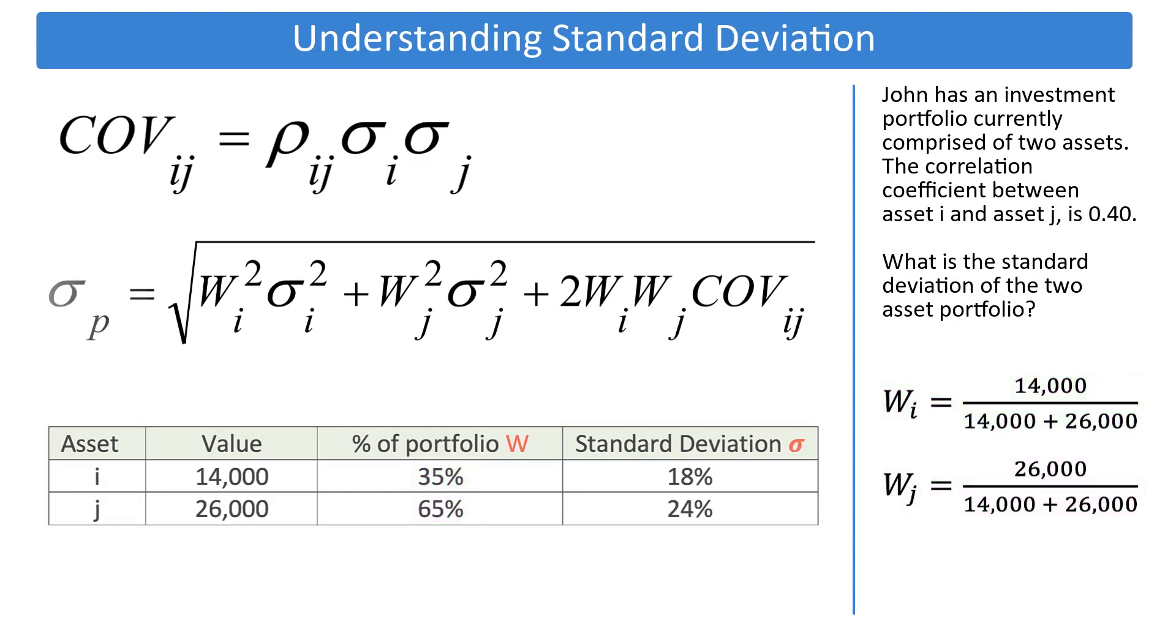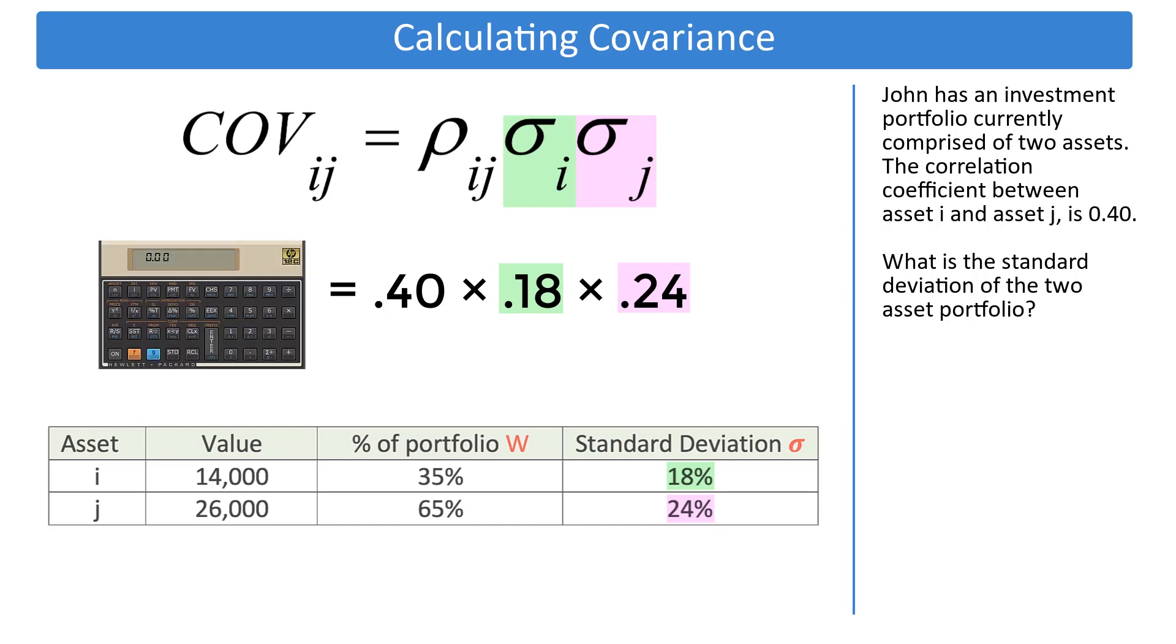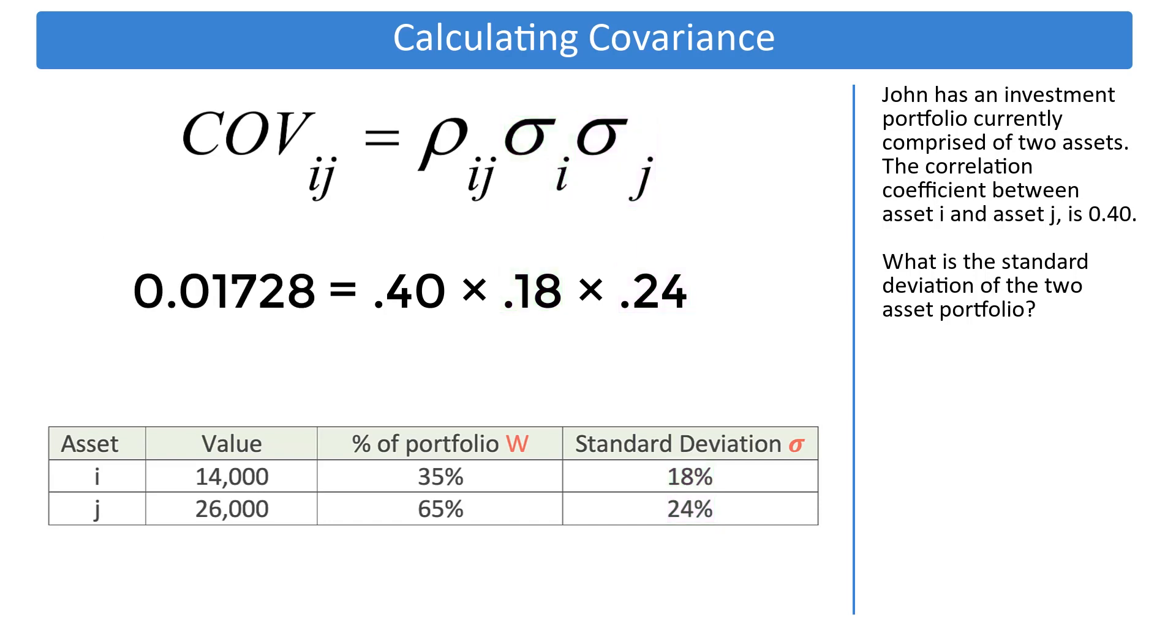Let's start with a formula for covariance. Rho is correlation coefficient, which is given as 0.40. The two sigmas are the standard deviation of two assets, I and J. Using a calculator, the product of these three numbers is 0.01728. We will use this number in the next formula.